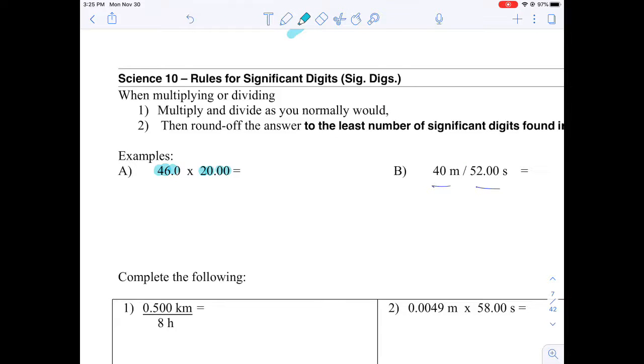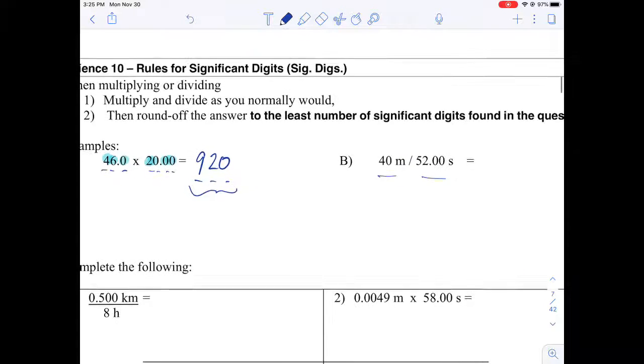In this video we're going to look at significant digits and multiplying and dividing. With these numbers here we've got one, two, three sig digs here and four sig digs. When I'm doing this math, I take 46 times 20.00. 46 times 20 gives me 920. This number has three sig digs and this number has three sig digs. This one has four. I can only take the lesser number of sig digs.